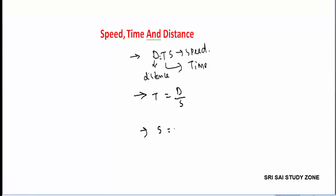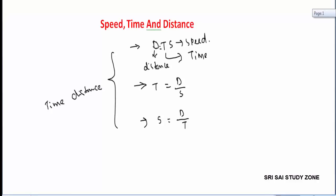Speed is equal to distance divided by time. Time is equal to distance divided by speed. So we have 3 to 4 simple and logical formulas based on DTS: distance equals time into speed.